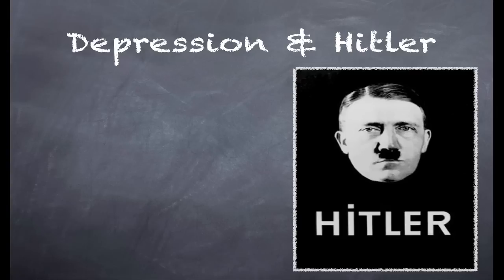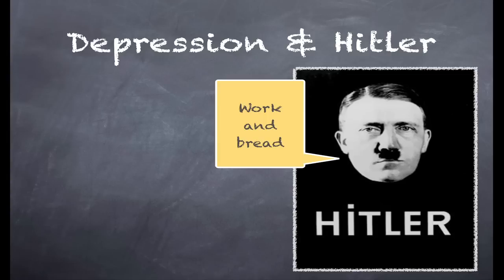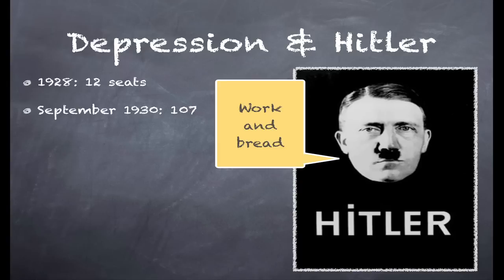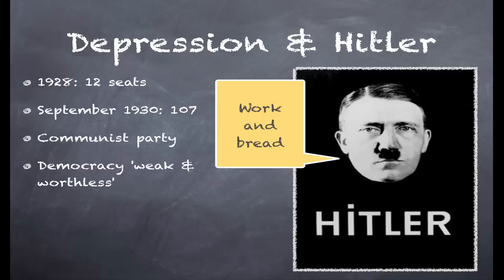Who stepped in and offered what seemed to be solutions to the Depression? Adolf Hitler and the Nazi Party, with very simple slogans — strangely reminiscent of Lenin's slogans — such as 'Work and Bread.' In 1928, the year before the Wall Street Crash, the Nazi Party had only 12 seats in the Reichstag, the German Parliament. By September of 1930, this had risen to 107, and certainly the Depression played a part in this. There was also a rise in support for the Communist Party. Many German voters saw democracy as weak and worthless, with some drifting towards the extreme left and the Communist Party, and others towards the extreme right and the fascist Nazi Party.